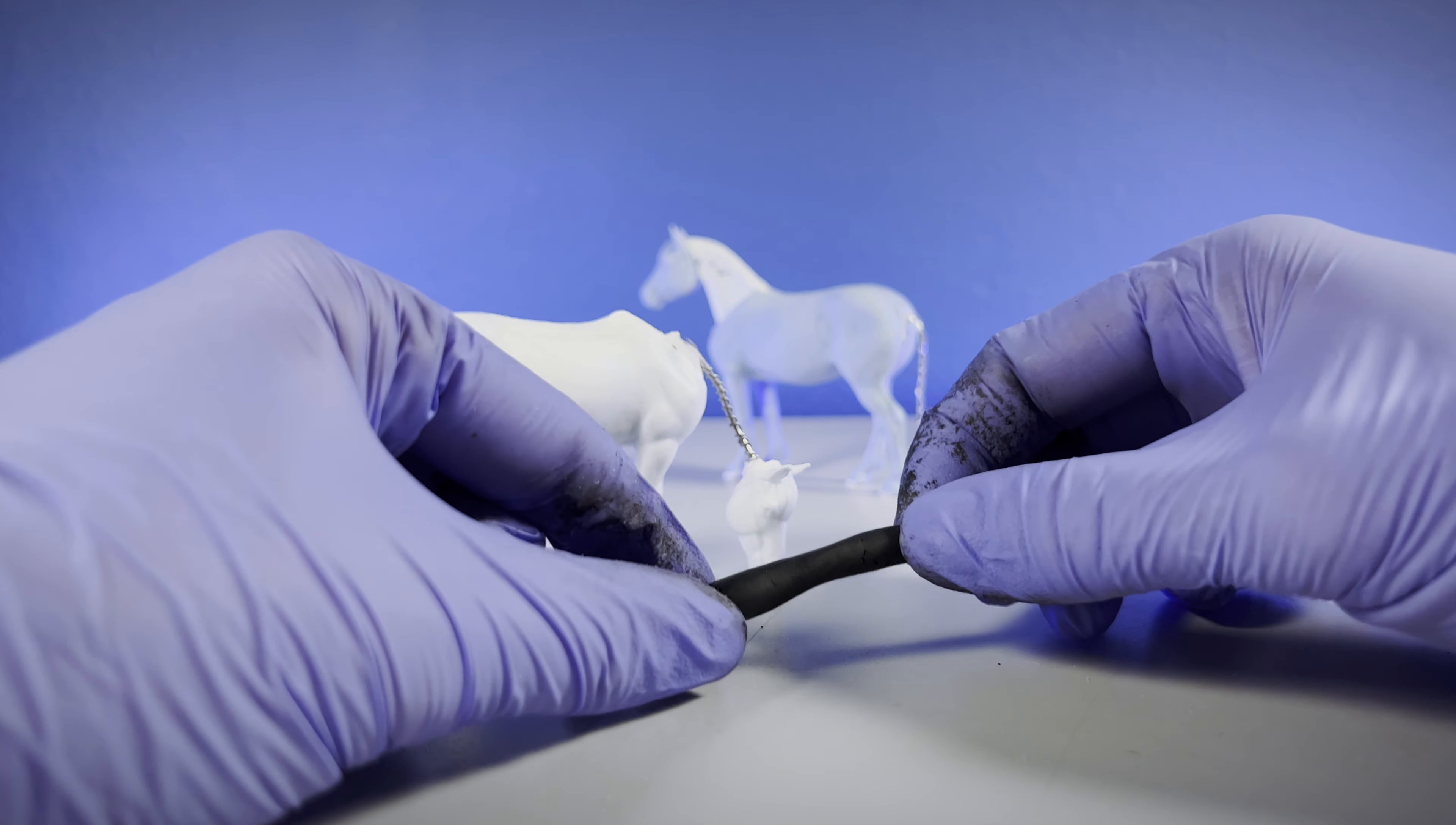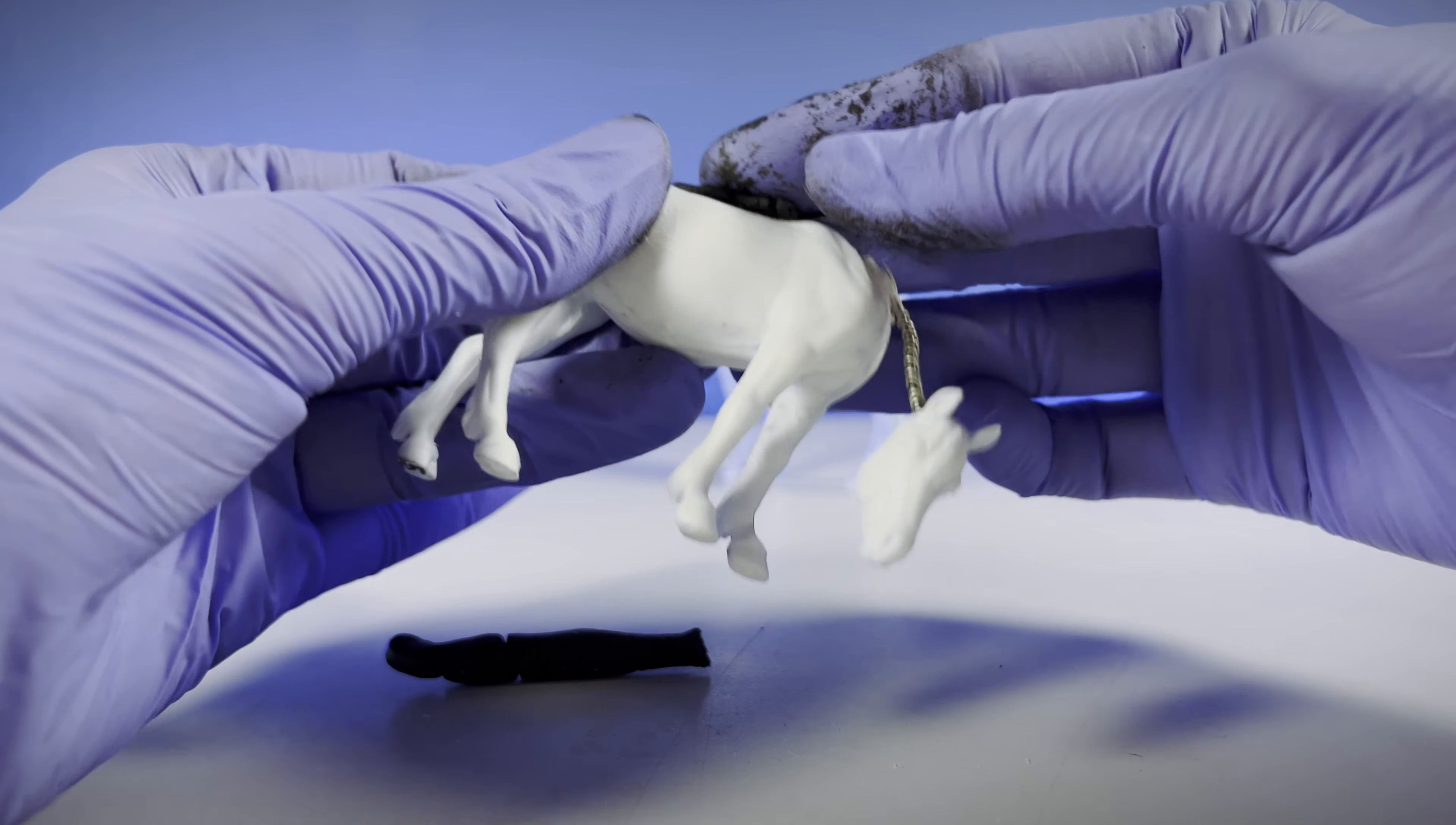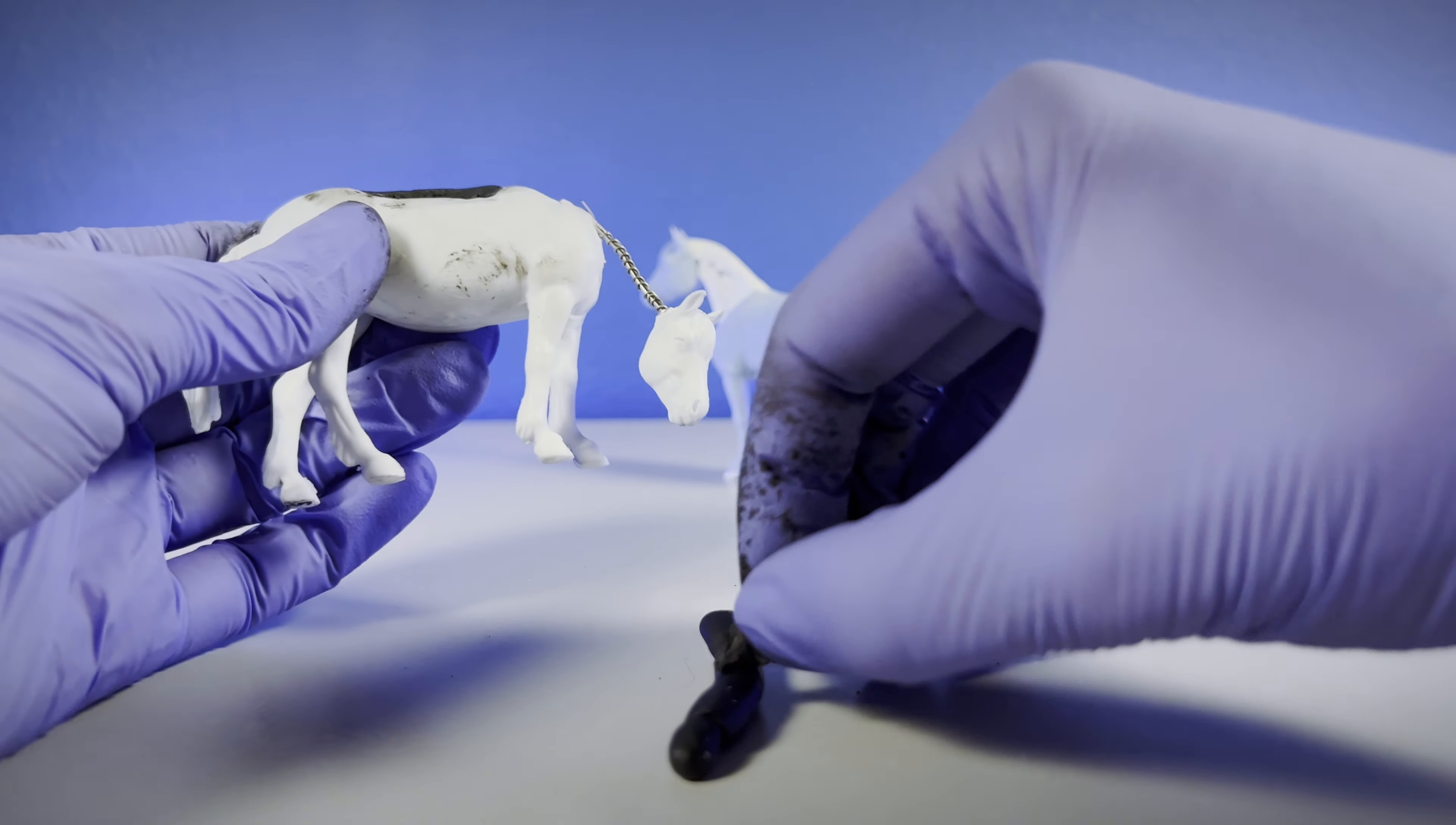First off, the overall consistency. In general, Milliput is one of the softest epoxy putties I've tried so far. I've heard people compare it to plastilina, and now that I'm sculpting with plastilina too, I'd say that's fair.